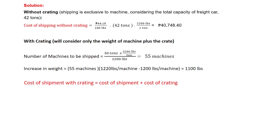Since we need to arrive at a cost in pesos, we convert 42 tons into pounds by multiplying by 2,200 pounds per ton. There will be cancellation of units — ton to ton and pounds to pounds — and the remaining unit is pesos. The cost of shipping without crating is equivalent to 40,748.40 pesos.